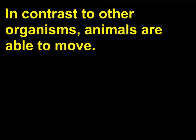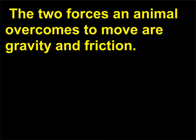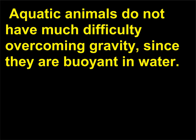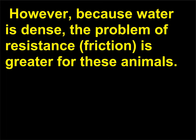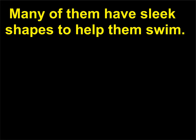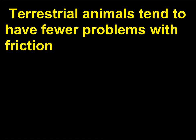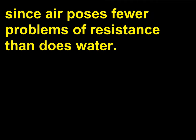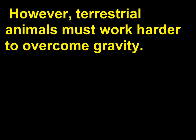What are the problems an animal must overcome to move? The two forces an animal overcomes to move are gravity and friction. Aquatic animals do not have much difficulty overcoming gravity, since they are buoyant in water; however, because water is dense, the problem of resistance (friction) is greater for these animals, and many have sleek shapes to help them swim. Terrestrial animals tend to have fewer problems with friction since air poses less resistance than water, but they must work harder to overcome gravity.